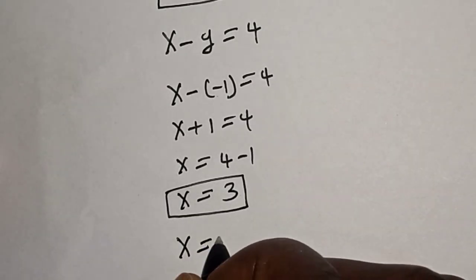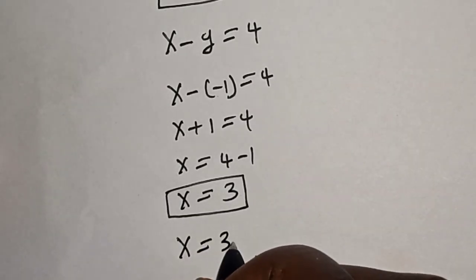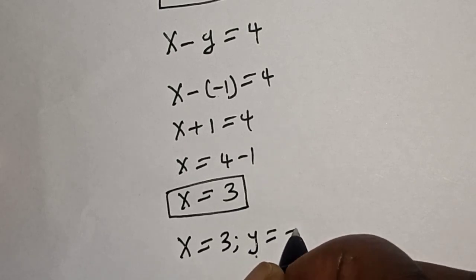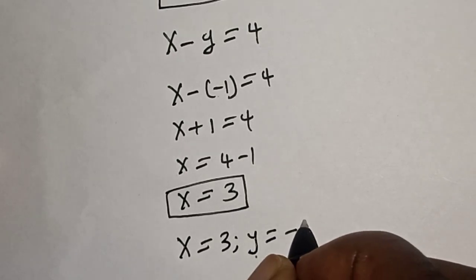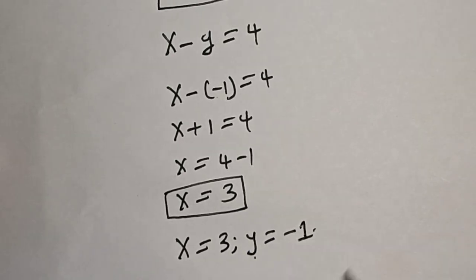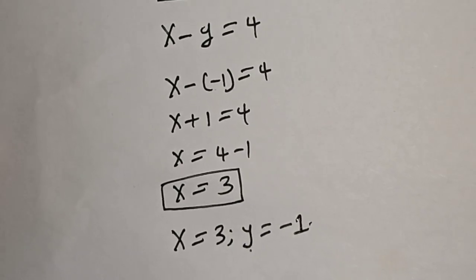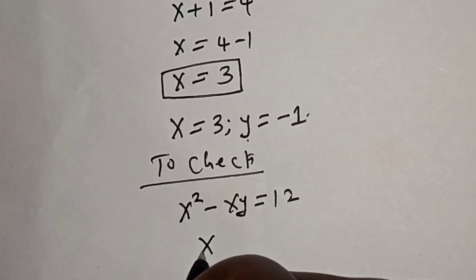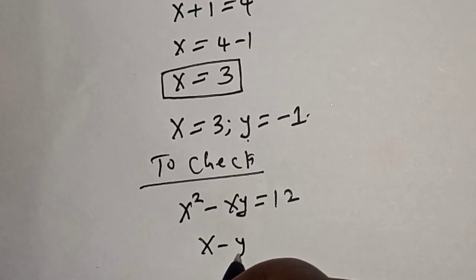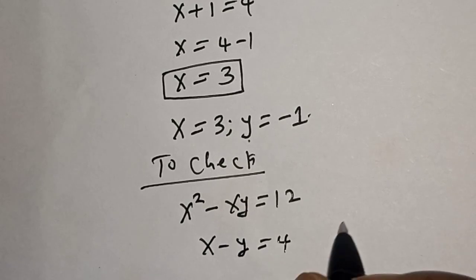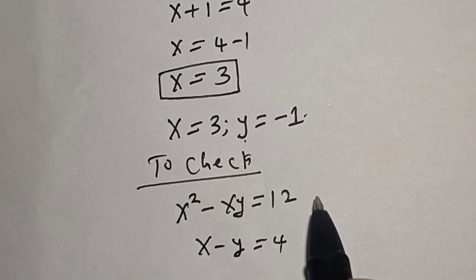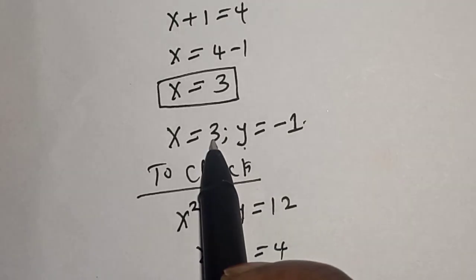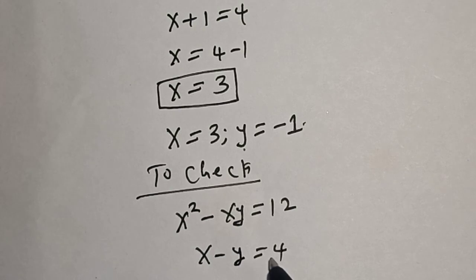Therefore our final answer is x is equal to 3 and y is equal to minus 1. Now we can check to confirm if our answer is right. From x minus y is equal to 4, when x is 3 and y is equal to minus 1.